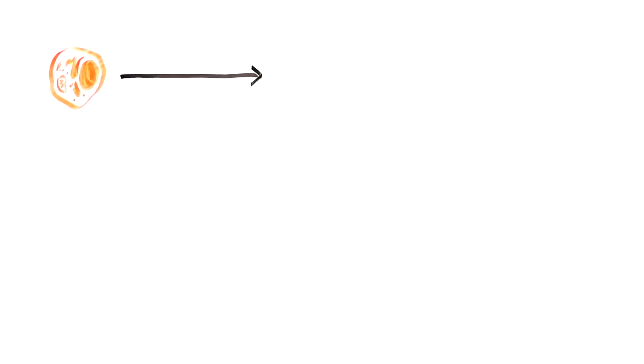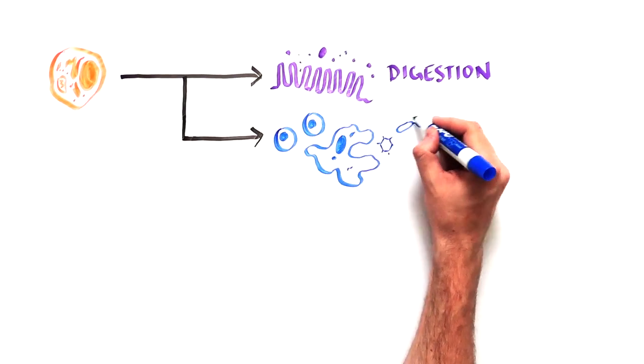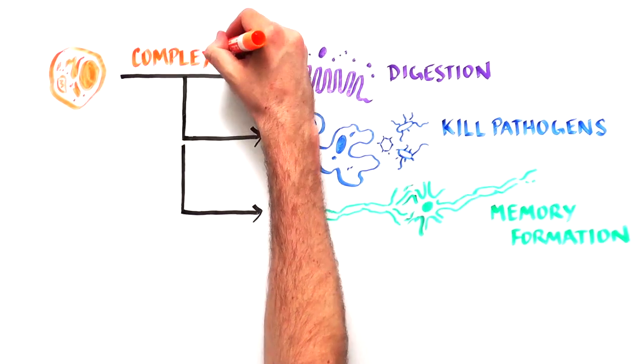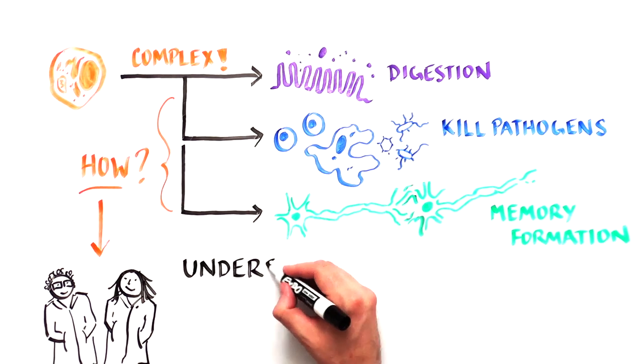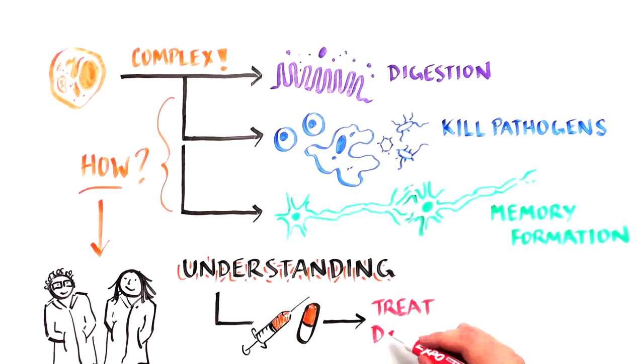The process by which one cell makes 35 trillion cells that do everything from digesting food to killing pathogens and creating memories is a complex one. But understanding this process is helping scientists treat disease.